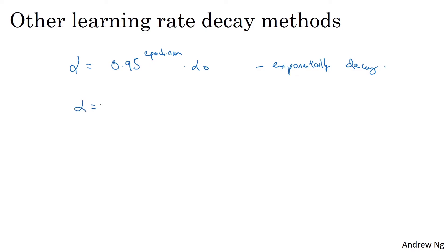Other formulas that people use are things like alpha equals some constant over epoch num square root times alpha zero, or some constant k, another hyperparameter over the mini-batch number t square rooted times alpha zero. And sometimes you also see people use a learning rate that decreases in discrete steps. Where for some number of steps you have some learning rate and then after a while you decrease it by one half, after a while, by one half, after a while, by one half. And so this is a discrete staircase.